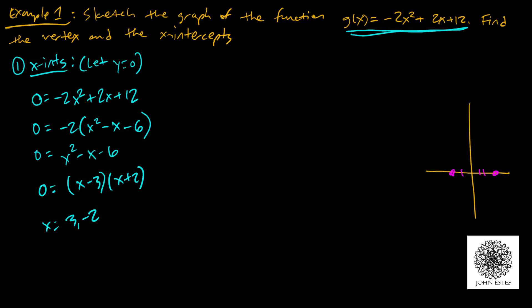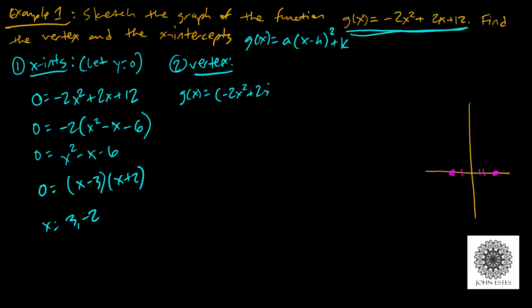To find the vertex we need to convert to vertex form a(x − h)² + k using completing the square. Starting with g(x) = −2x² + 2x + 12, separate the x-terms: g(x) = −2(x² − x) + 12. The leading coefficient inside the parentheses is 1. For completing the square, take the middle term coefficient −1, divide by 2 to get −½, then square it to get ¼.